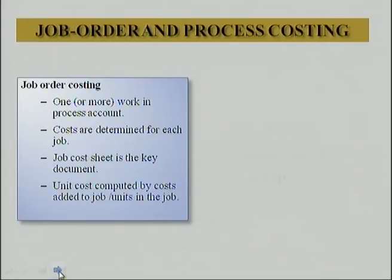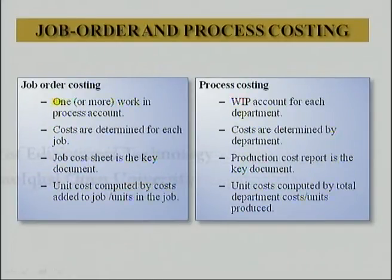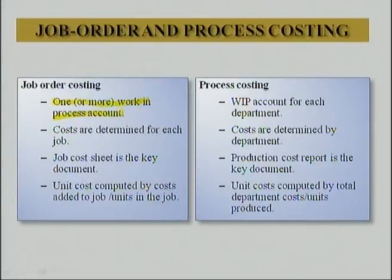Now we will discuss the differences between job order and process costing. In job order costing, one or more work-in-process accounts are prepared for each type of job. Whereas in process costing, a work-in-process account is prepared for each department — a separate work-in-process account is prepared for every department.